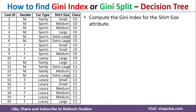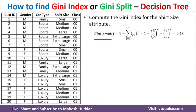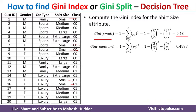Next is shirt size, which has four possibilities: small, medium, large, and extra large. For small, there are 5 examples — 3 are C0 and 2 are C1, so Gini(small) = 1 − (3/5)² − (2/5)² = 0.48. For medium, there are 7 examples — 3 are C0 and 4 are C1. So Gini(medium) = 1 − (3/7)² − (4/7)².